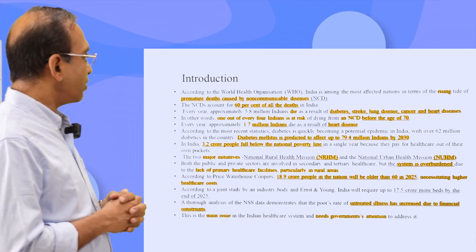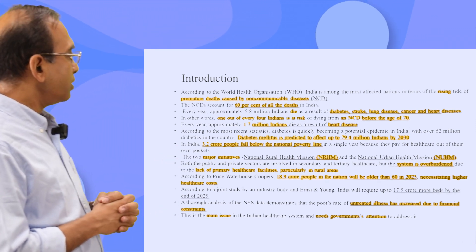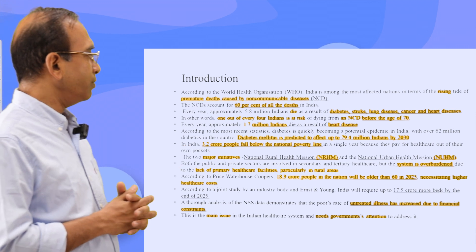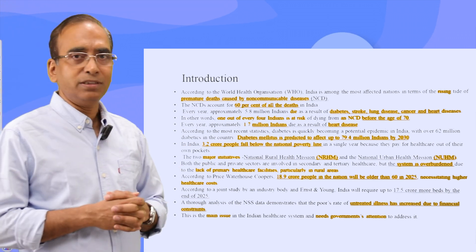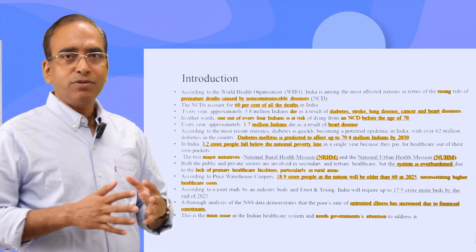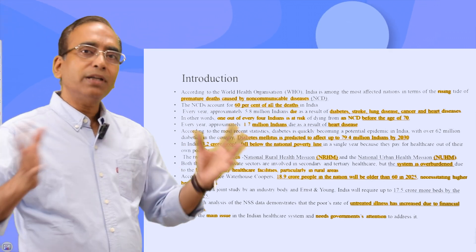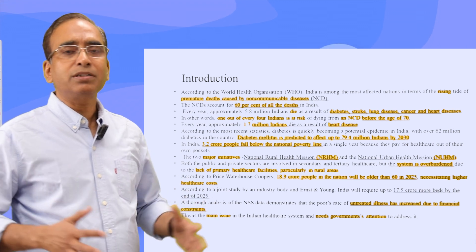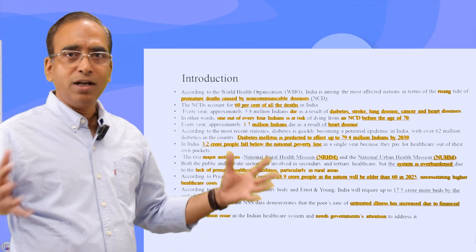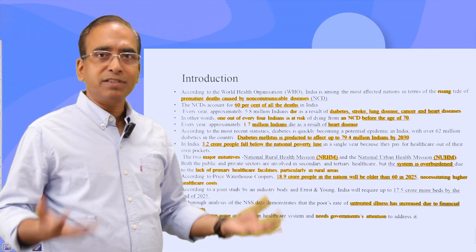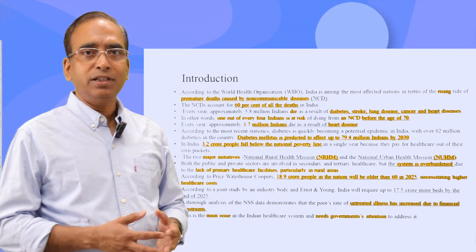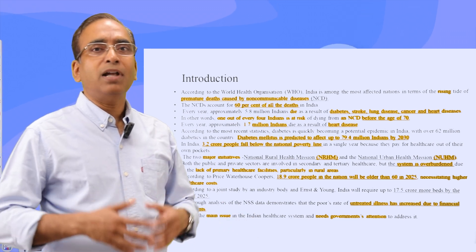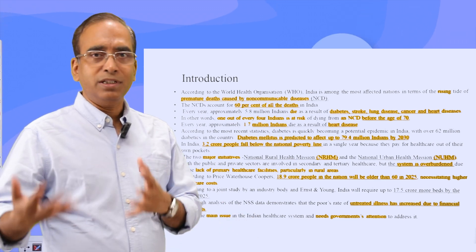According to PricewaterhouseCoopers, 18.9 crore people in the nation will be older than 60 by 2025. Though we were talking about demographic dividend, we need to understand that we have a large population and our life expectancy has increased, so the country will increasingly have a large number of senior citizens.